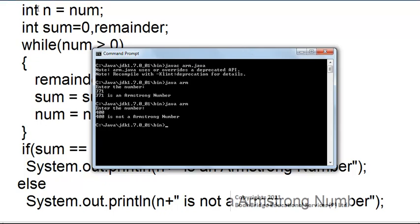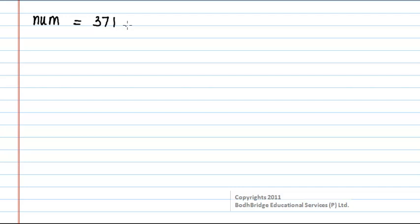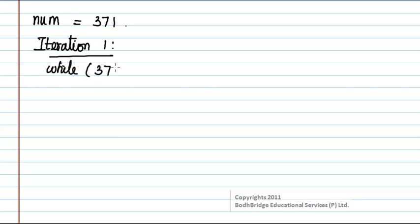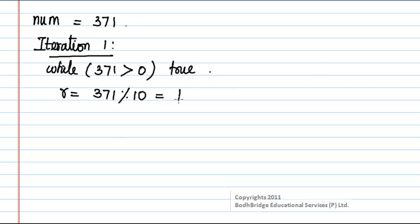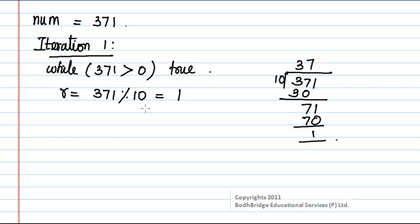Now let us look at the logic of this program. The number given by the user is 371. In the first iteration of the while loop, we check if 371 is greater than 0 — this condition is true and the loop executes. Within the loop, the remainder is found when 371 is divided by 10. Since 10 times 37 is 370, the remainder is 1.